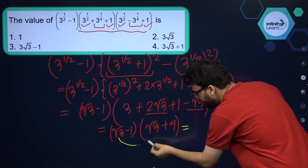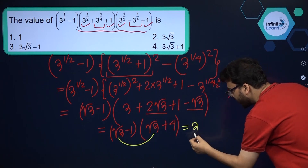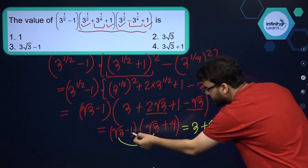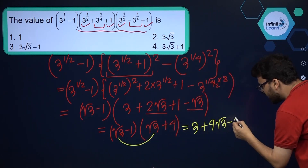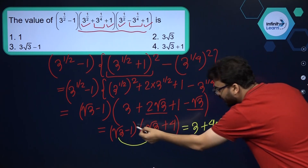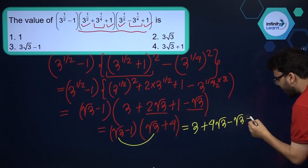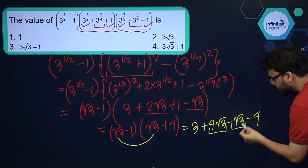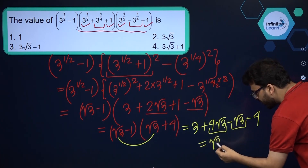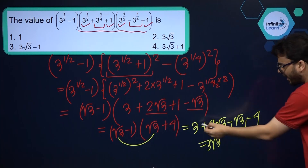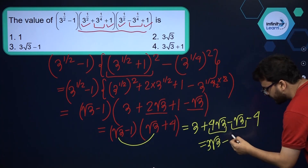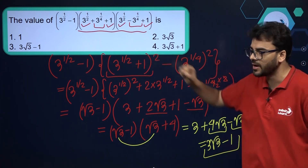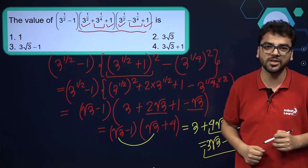So root 3 into root 3 is 3, and then root 3 into 4 is plus 4 root 3, and then minus root 3, and minus 1 into 4 is minus 4. If we further simplify, 4 root 3 minus root 3 is 3 root 3, and 3 minus 4 is minus 1. So the answer is 3 root 3 minus 1. I hope this is clear to every student watching this video.